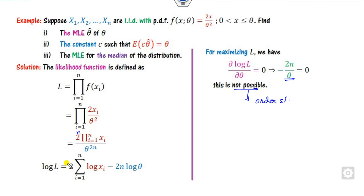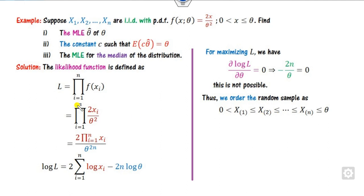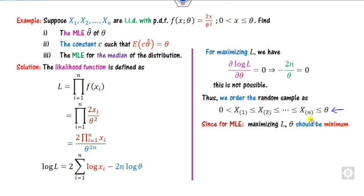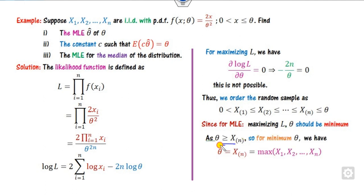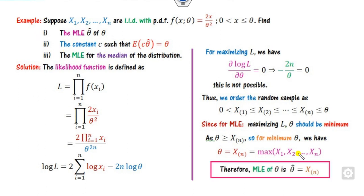Using the order statistics approach: the log-likelihood can be written as log of the product plus a term involving theta. You can see that L will be maximum when the expression involving theta is minimized. From the expression, the minimum value of theta is X(N). So the MLE answer for the first part is X(N).